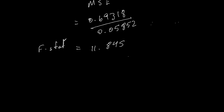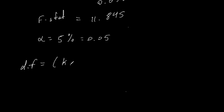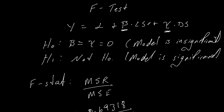Now we need to calculate our critical value to see if our F-statistic falls within the critical region. To calculate our critical value we need two degrees of freedom and an assumed level of significance. We'll assume alpha equals five percent since the question did not specify. For the F-test we need degrees of freedom in the form of k and n minus k minus one. K is the number of explanatory variables — in our regression equation there are two: CS and DS — so k equals two.